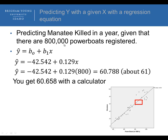Let's predict manatees killed in a year given that there are 800,000 powerboats registered. The regression formula is y-hat equals negative 42.542 plus 0.129 times x. Plugging this into Excel or SPSS, we get a result of about 60.788 — so approximately 61 manatees would be killed if 800,000 powerboats were registered. We put in 800 because every increase of 1 in the x variable represents 1,000 powerboats. Using a calculator gives a relatively close number of 60.658.